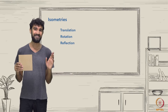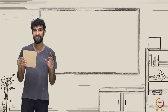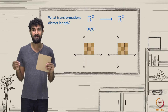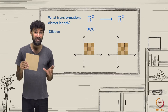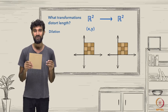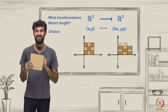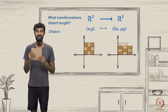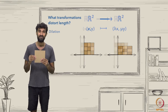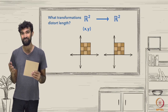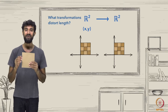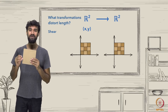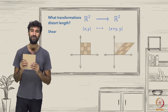Now, what if we relax our requirement that our transformation of the plane preserves length? What transformations have you seen which distort length? One of the simplest is the dilation, or stretching map, which takes a vector to a scaled vector. These dilation maps take the unit square to various rectangles, or to larger and smaller squares if the scaling parameters lambda and mu are equal. If you've taken a course in linear algebra, you might have seen a shear transformation, which takes a square to an arbitrary parallelogram of your choice. Here's one example of a shear transformation, though we'll see some other types later on.